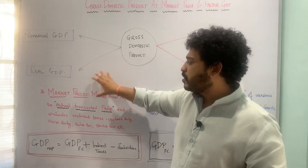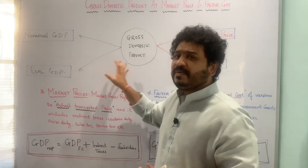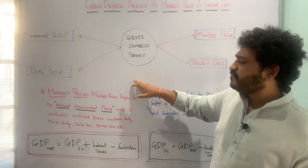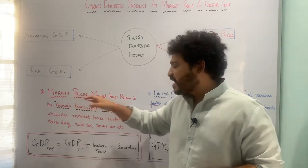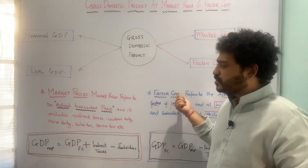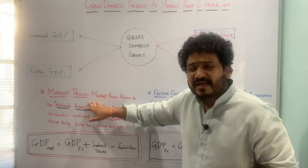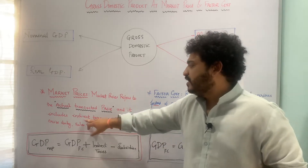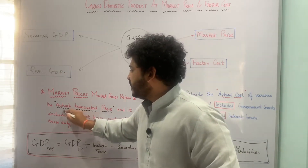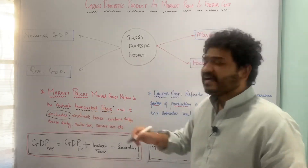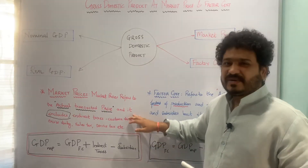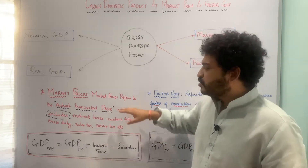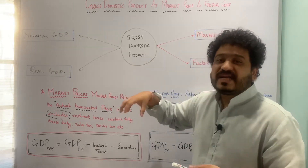Today I'll be talking about calculating GDP with respect to market prices as well as factor costs. Market price refers to the actual transacted price, and it includes indirect taxes — such as customs duty, excise duty, sales tax, and service tax, now largely replaced by GST. So market price specifically means the actual transacted price incorporating indirect taxes.